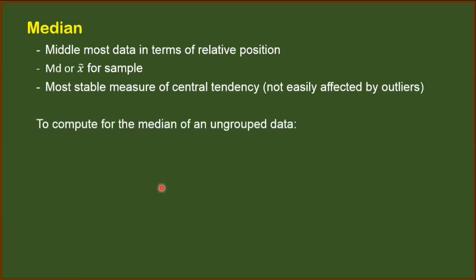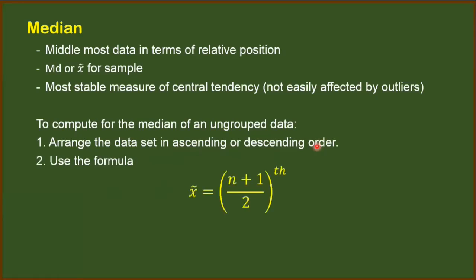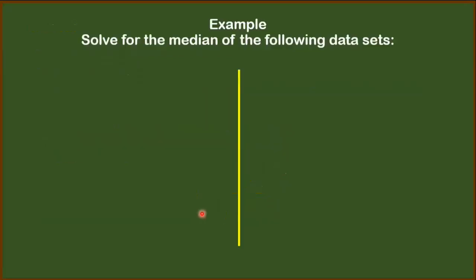To compute for the median of ungrouped data, first you have to arrange the dataset in ascending or descending order. Next, we will use this formula: X̃ = (n + 1) / 2. The answer for this formula will tell us the position of the median — not the median itself, just the position where we can find the median. Here, n is the number of data involved. To better understand how this formula works, let's look at the following example.